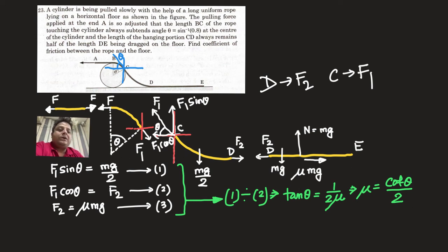Now divide one by two. What you are doing, that this two is actually equal to, if you substitute F₂ as μmg, so F₁ cos theta happens to be equal to μmg. So that is equation four. So actually you are dividing one by four. One by four you get tan theta is equal to one by 2μ. So μ is equal to cot theta by 2. So that's it.